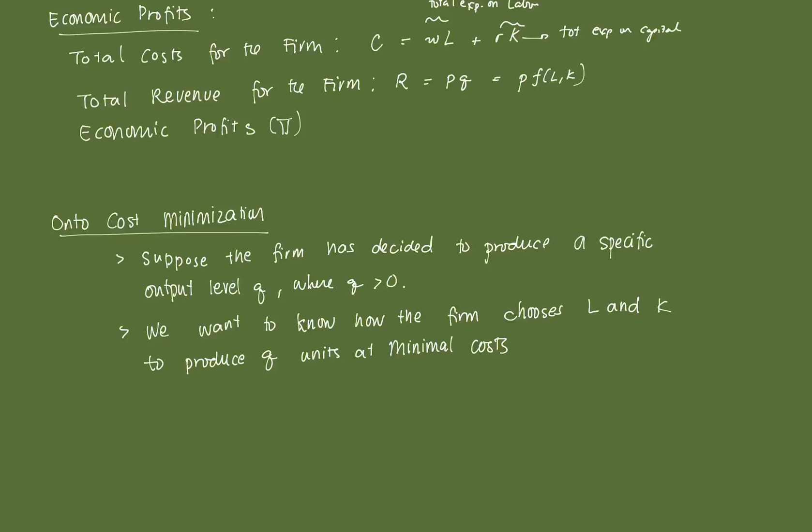Then economic profits, we'll denote this moving on as pi. That's just pi is equal to revenue less cost, right? Very straightforward. And if we plug in what we found here, so that's P times Q minus WL plus RK. And simplifying it, we get pi is equal to P*F(L,K) minus WL minus RK. So this is our economic profit function. This is our revenue function. And this is our cost function.